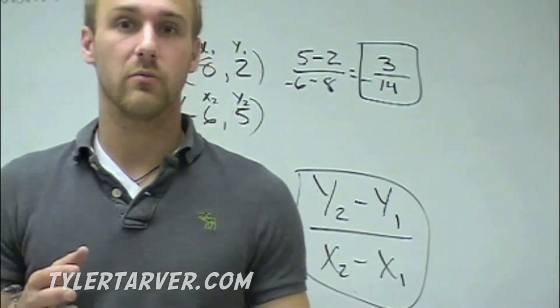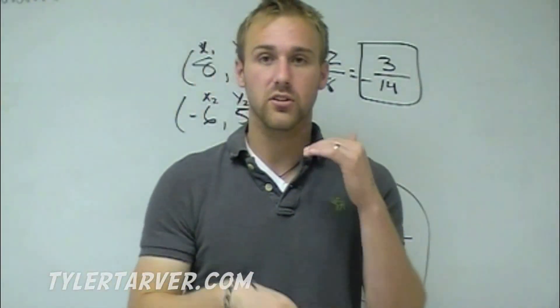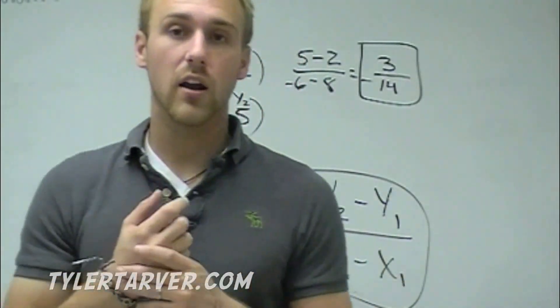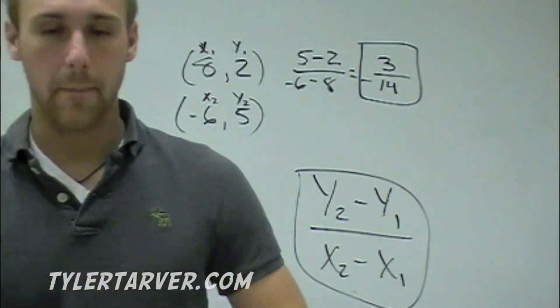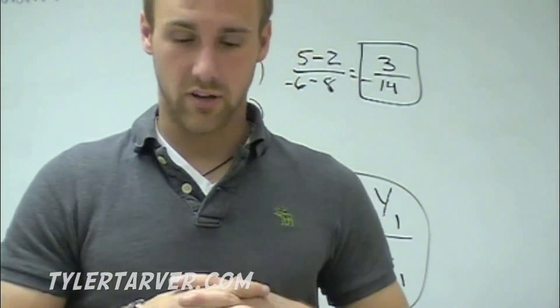It's pretty much straightforward. You can either count, rise over run. Remember, rise goes on top, run goes on bottom. You can count it if you have a graph. If not, you can just do this and do the formula. You can always do this anyways just to check yourself.